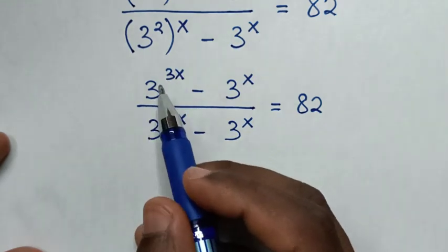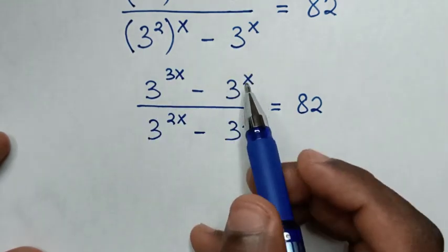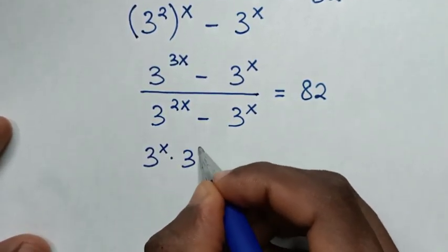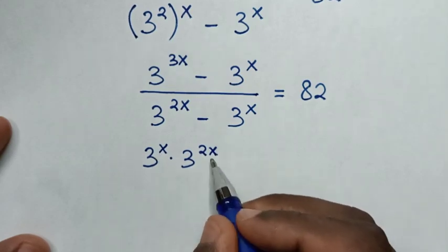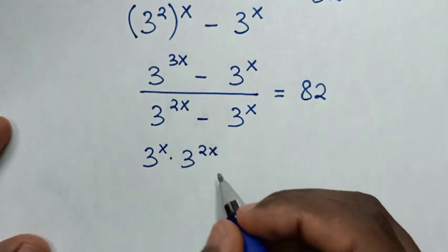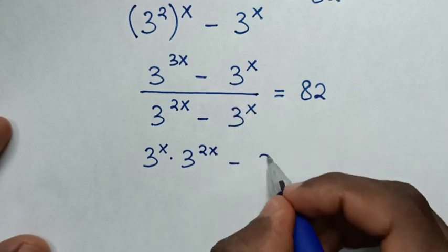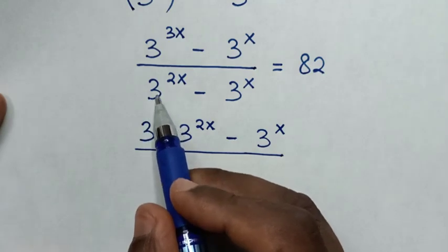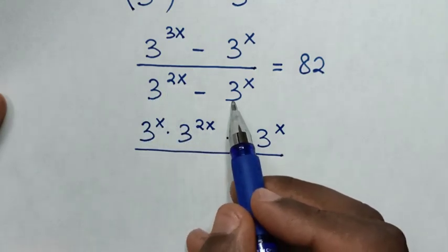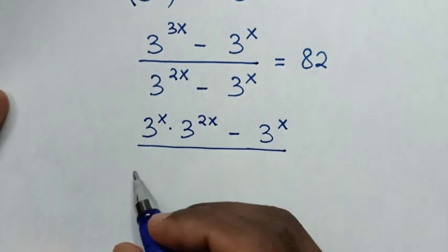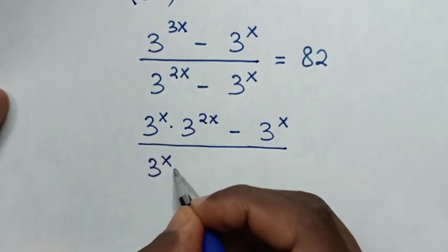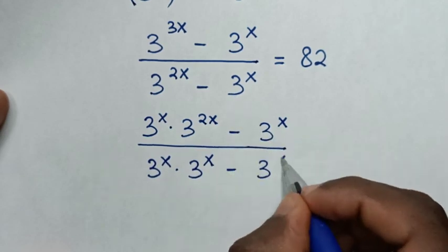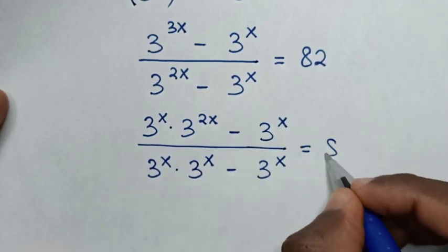We make 3^(3x) have a common factor of 3^x. So 3^(3x) is the same as 3^x times 3^(2x), because x plus 2x equals 3x. Similarly, 3^(2x) is the same as 3^x times 3^x. So the expression becomes (3^x times 3^(2x) minus 3^x) over (3^x times 3^x minus 3^x) equals 82.